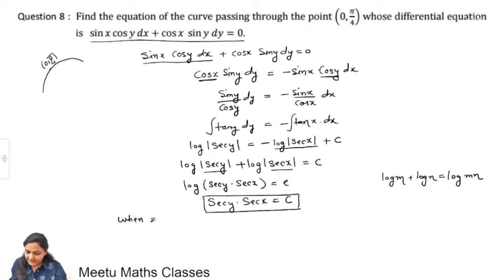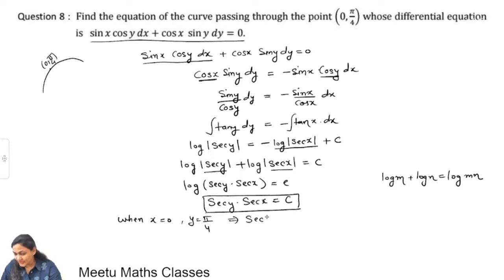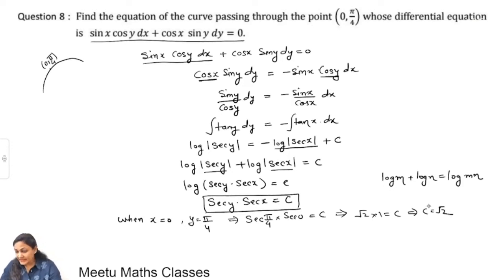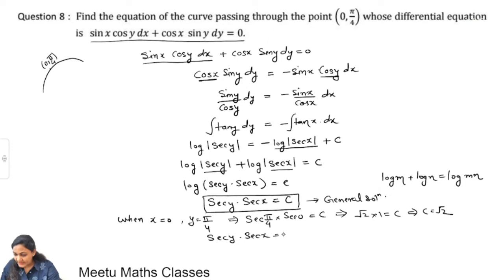When x = 0 and y = π/4, substitute into the general solution: sec(π/4) · sec(0) = c. Since sec(π/4) = √2 and sec(0) = 1, we get c = √2. Substituting back, the particular solution is sec y · sec x = √2, which can also be written as cos y = cos x / √2. This is the required solution curve.